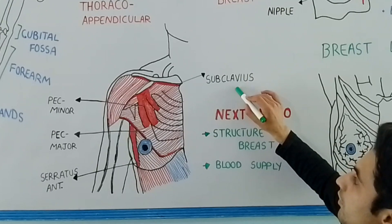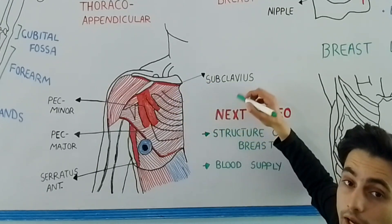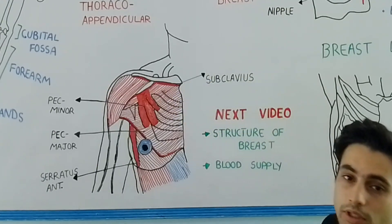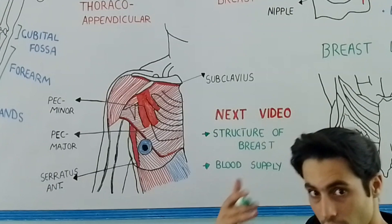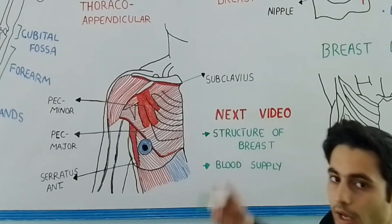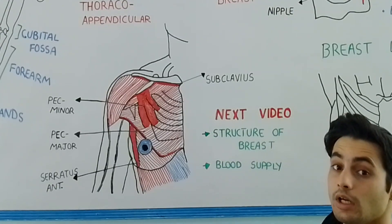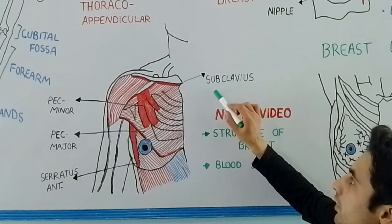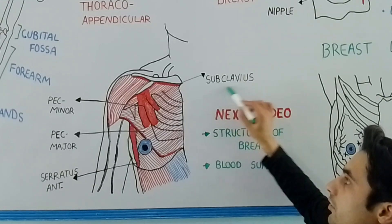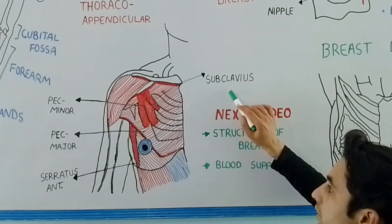Have a look — below the clavicle we have the subclavius muscle. 'Sub' means below and 'clavius' refers to the clavicle bone, that is why it is known as the subclavius muscle. So we have four muscles: the subclavius, pectoralis major, pectoralis minor, and the serratus anterior.